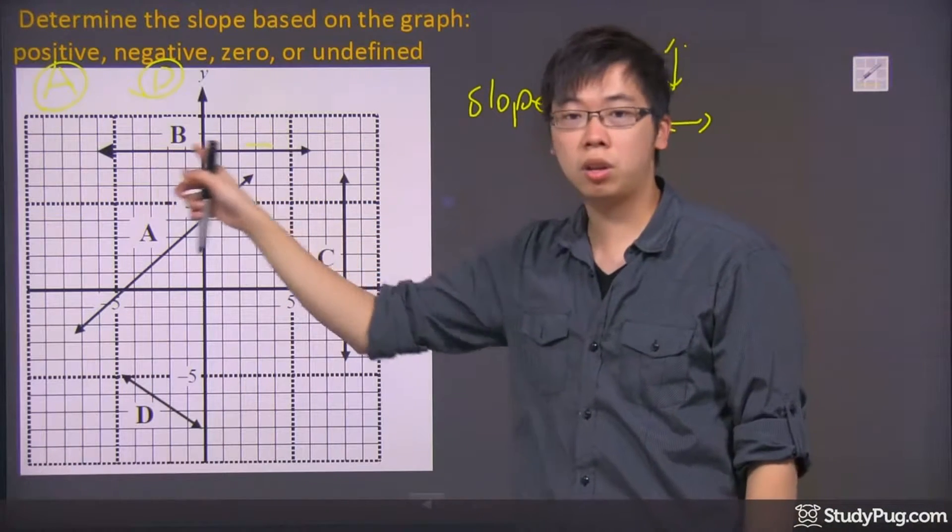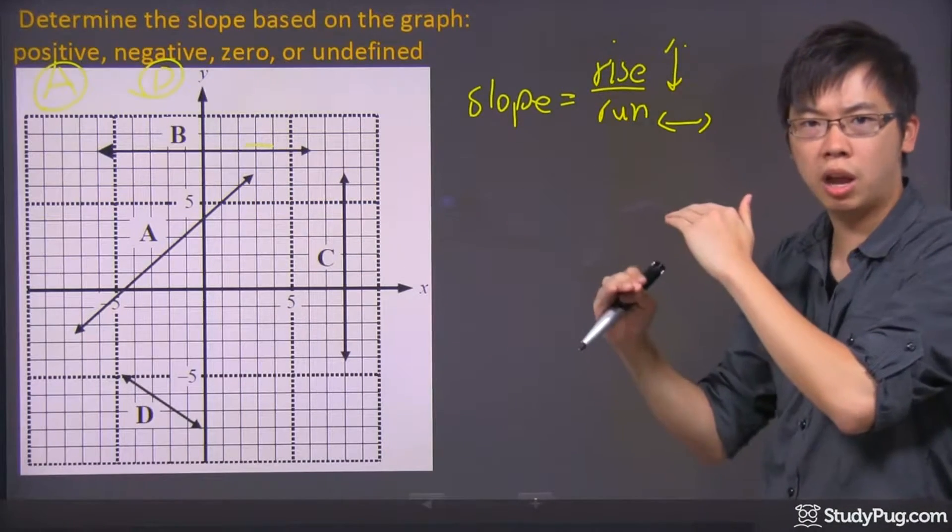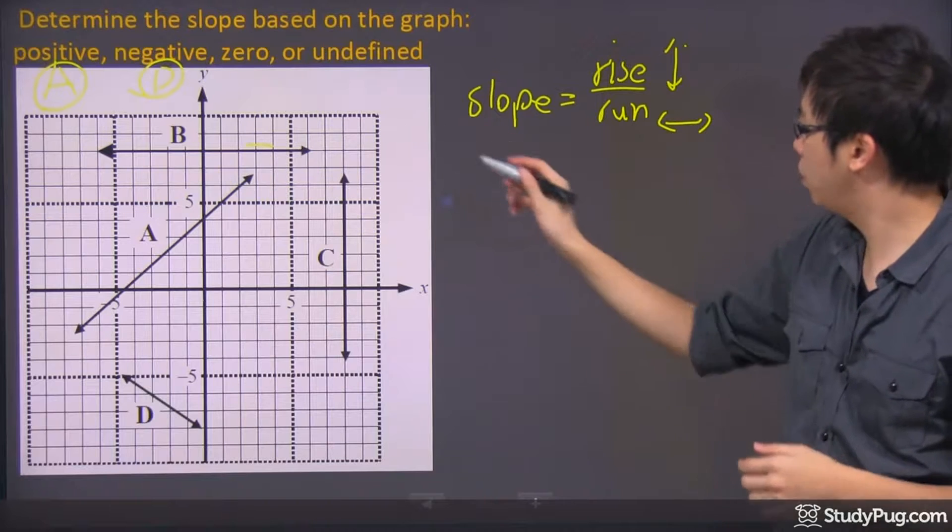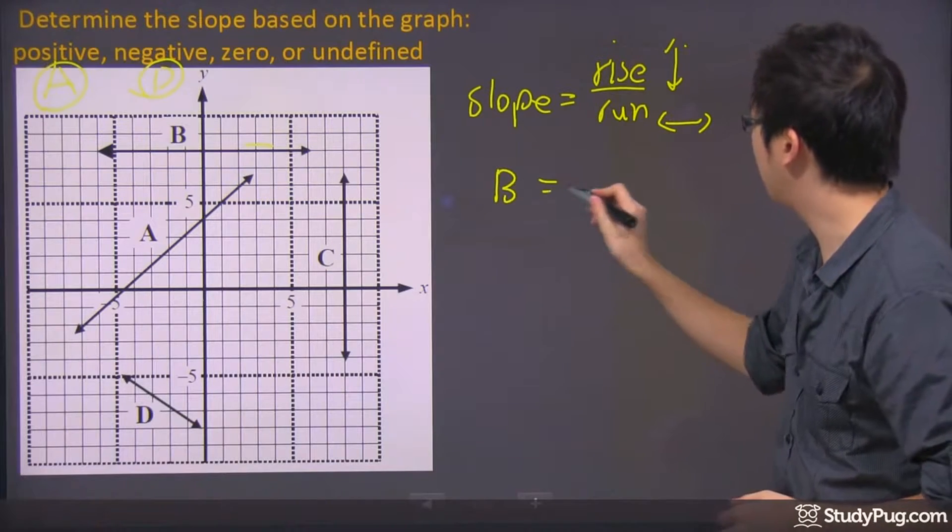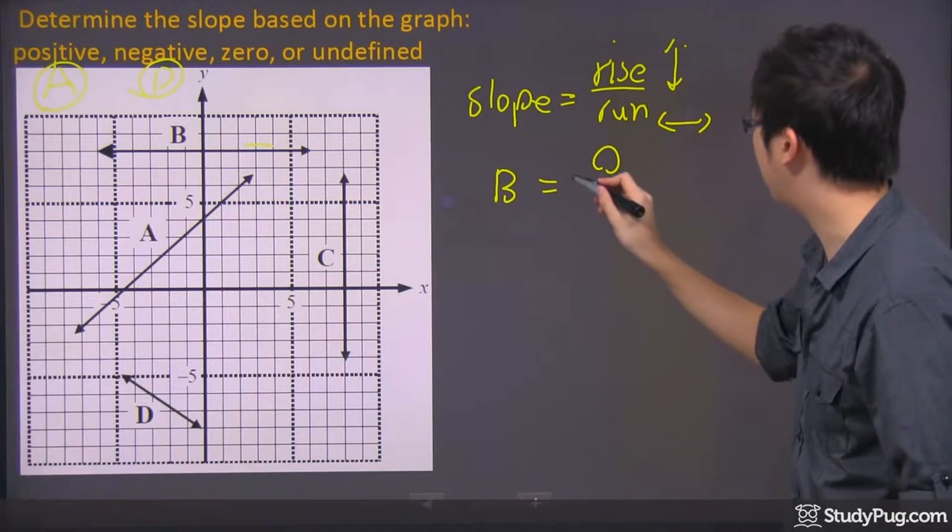Now if you look at the B right over here, it's going flat, right? So is it really going up and down? It's not. So for B, the slope for the B, there is nothing for the rise. So we can actually put a zero over here.